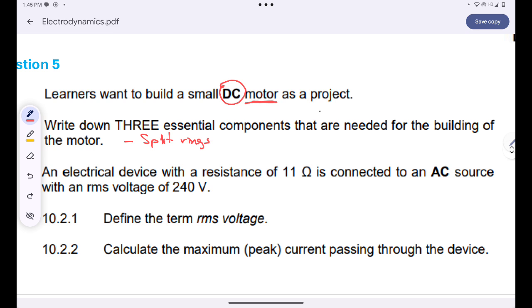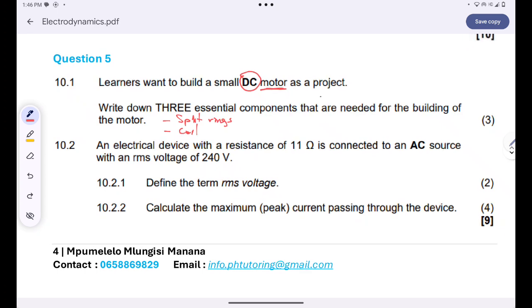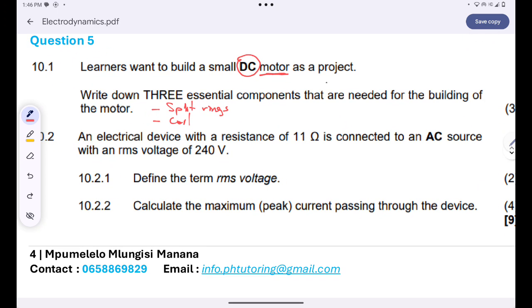So firstly, we need an external source, since we are dealing with the motor. Secondly, we need split rings. Thirdly, we need a coil, a rotating coil, or you can say an amateur. Fourthly, we need magnets so that you can have magnetic field. I've already mentioned four, and all they wanted was three of them. So just pick any three on the four that I've listed.